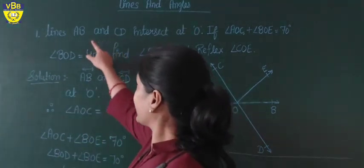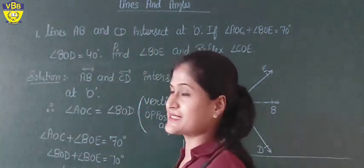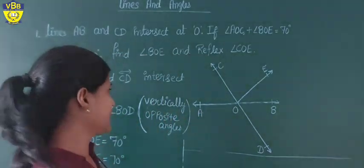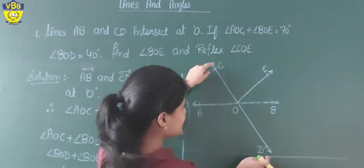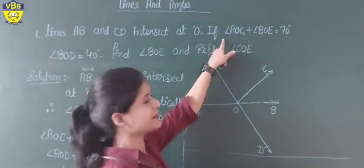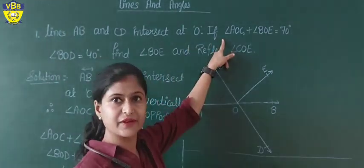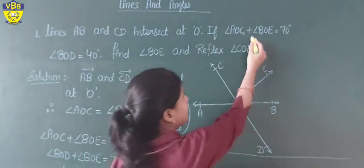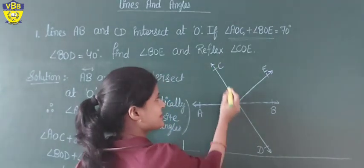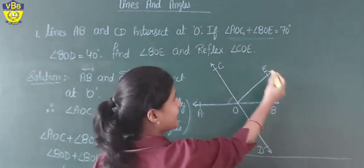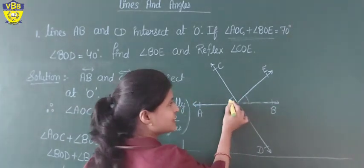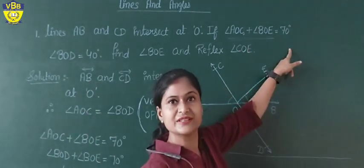In the first question, lines AB and CD intersect each other at point O. It is given that angle AOC plus angle BOD — the sum of these two angles is equal to 70 degrees.